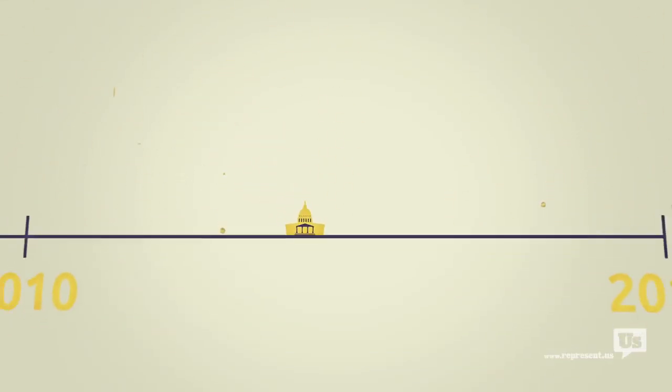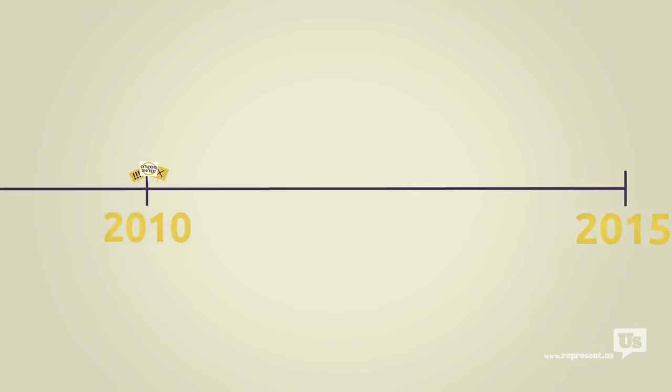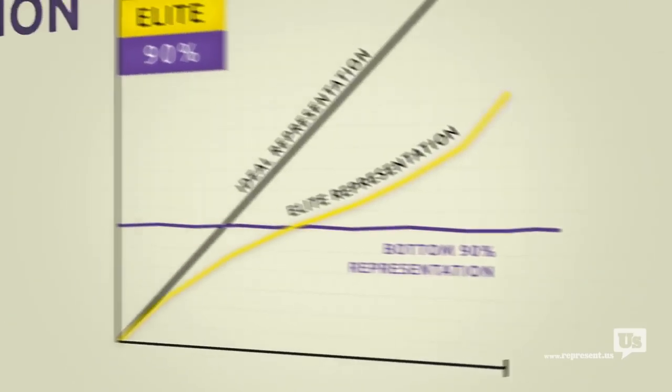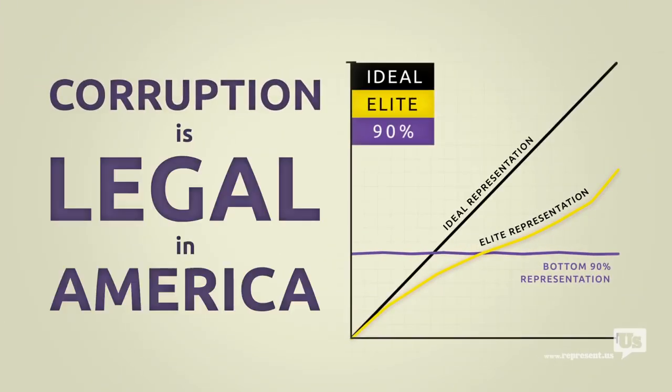You know there's this idea out there that this only became a problem after the Supreme Court Citizens United decision in 2010. But the data goes back almost 40 years and the results are clear. Corruption is legal in America.